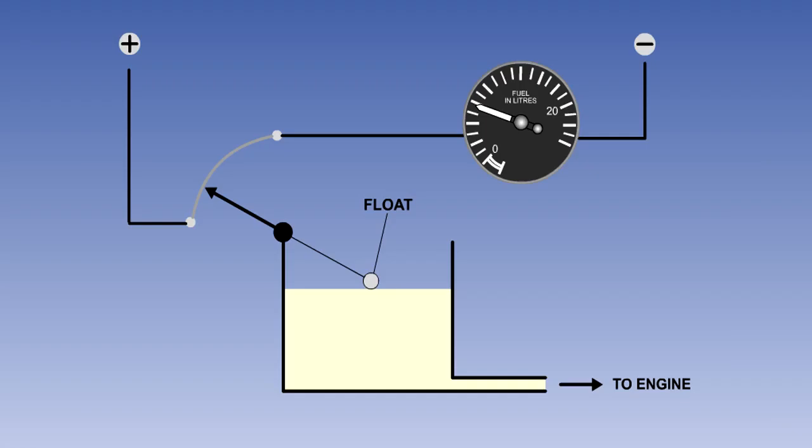Volume measurement can be achieved by having a float in the fuel tank attached by a suitable mechanism to a variable resistor. The cockpit gauge is normally an ammeter calibrated in gallons or liters in a circuit with a resistor.